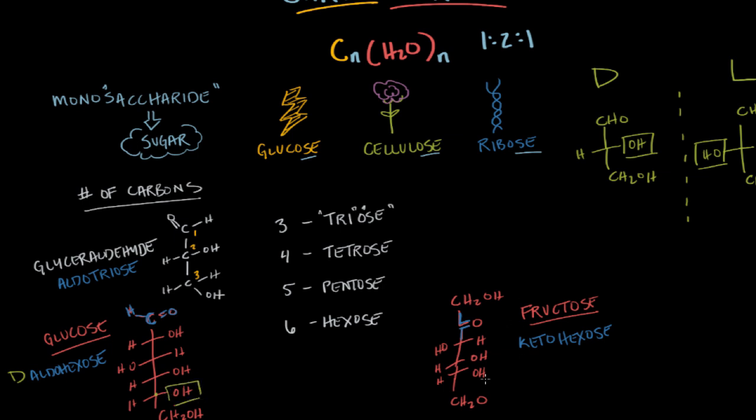And with our fructose, same thing. The last chiral carbon has the OH group on the right-hand side, so this is a D ketohexose.